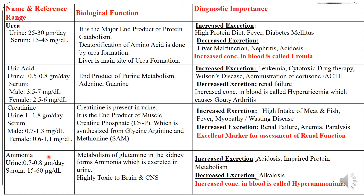Now, ammonia. Ammonia in urine is excreted around 0.7 to 0.8 grams per day. And in serum, it is present in very low amounts — which is 15 to 60 micrograms per deciliter.